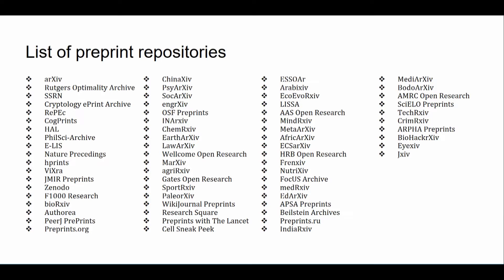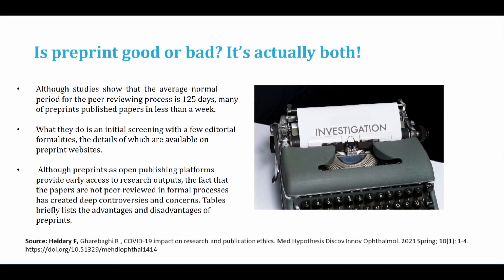In this slide I have listed current preprint repositories which are available on the internet. An important fact is that although studies show the average normal period for peer review is 125 days, many preprints publish papers in less than a week. What they do is an initial screening with a few editorial formalities, the details of which are available on each preprint website and are specific to each preprint.